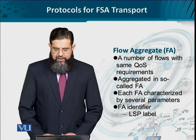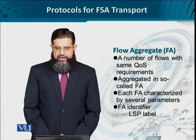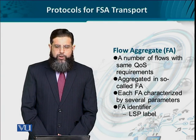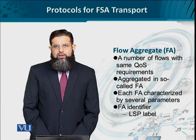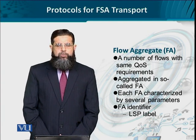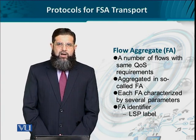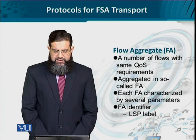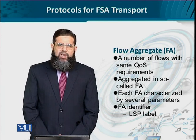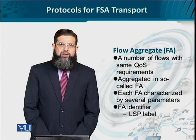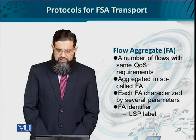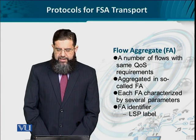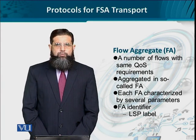Next, we have the flow aggregate. A flow aggregate is a bundle of flows where all flows correspond to the same QoS requirements. The flow aggregate is one for certain flows with the same QoS requirements and another for a differing bundle of flows. Each flow aggregate is identified by several parameters. The most obvious one is the flow aggregate identifier — that is, a label switched path, which is a label assigned to a certain flow in MPLS networks.